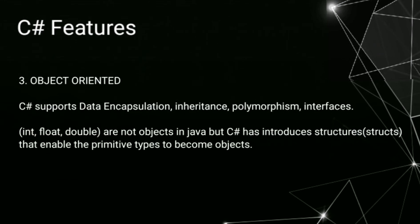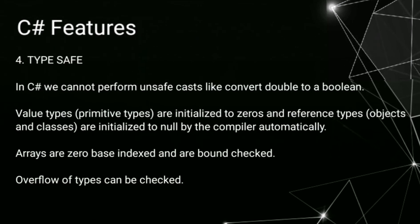3. Object oriented. C sharp supports data encapsulation, inheritance, polymorphism, and interfaces. Int, float, and double are not objects in Java, but C sharp has introduced structures — structs — that enable the primitive types to become objects.